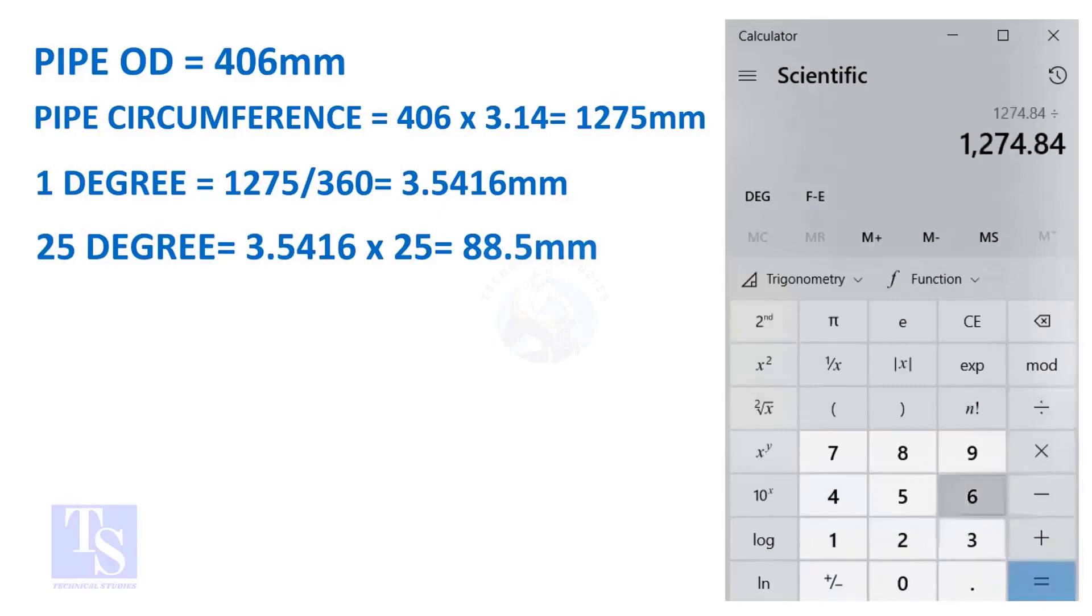And finally, multiply the 1 degree arc length by 25. Now you have the arc length of 25 degrees. You can apply this formula to get the arc length of any degree.